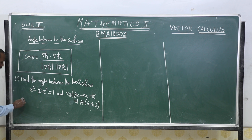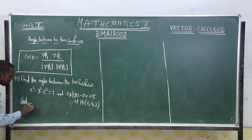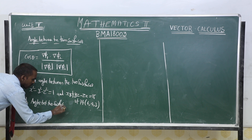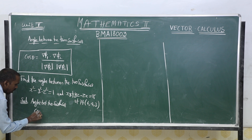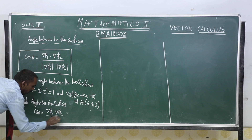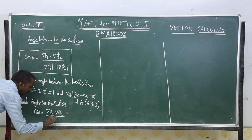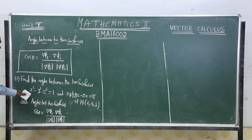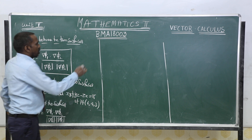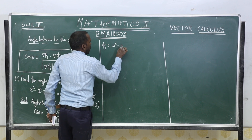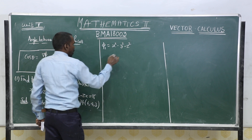First, write down the formula. The angle between two surfaces is given by cos θ = (∇φ₁ · ∇φ₂) / (|∇φ₁| · |∇φ₂|). Here φ₁ is the first surface: x²-y²-z²=1.